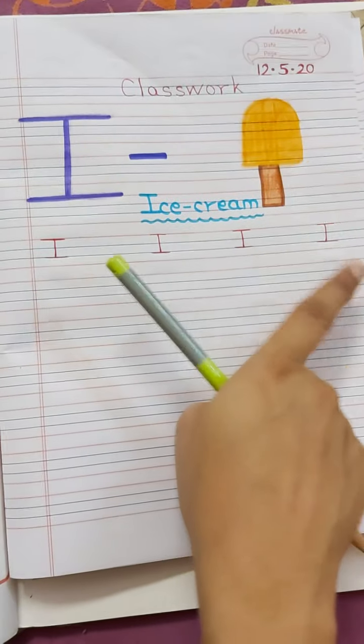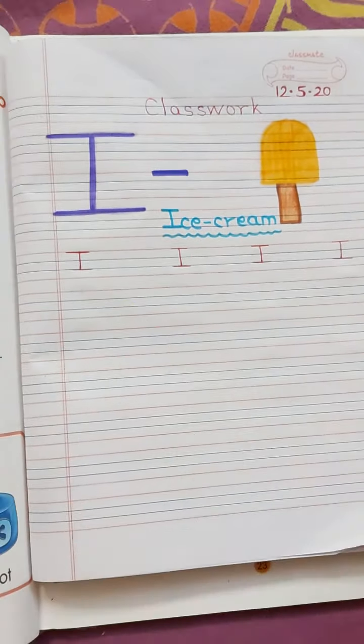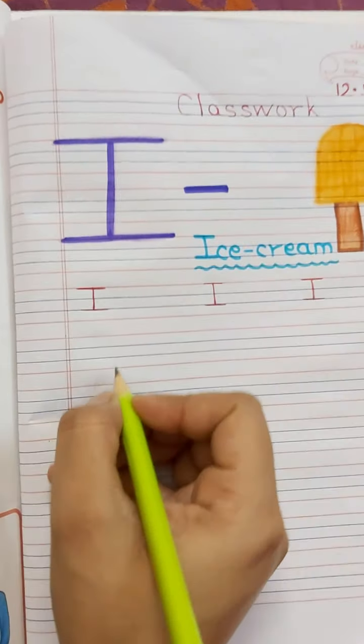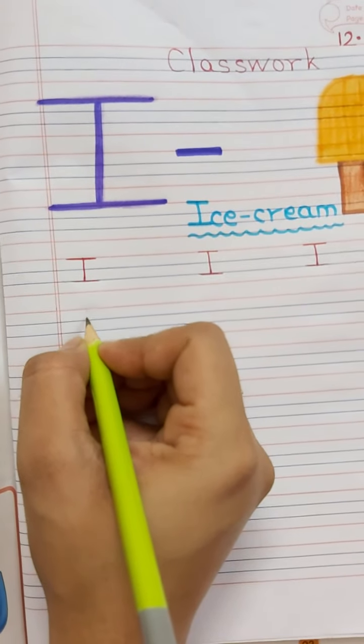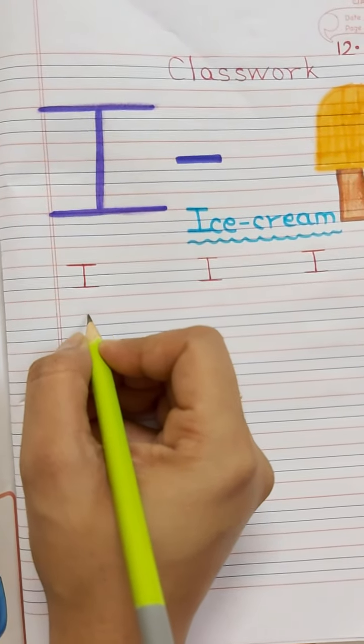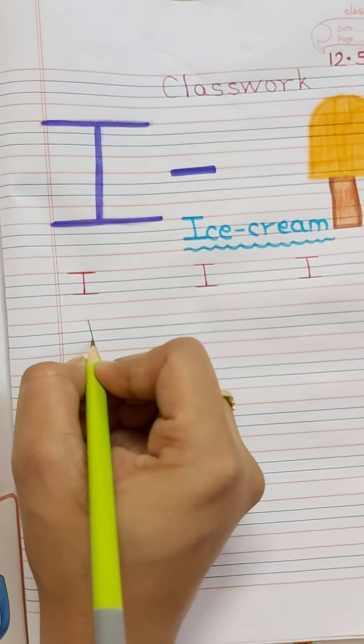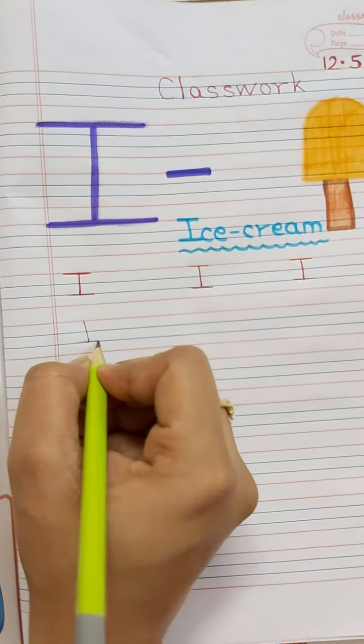Then, you have to write four times I. Four times aapko I likhna hai. Now, my dear students, bachyo idar dekhiya how you have to do the work. You have to write I in three lines. Straight line, sleeping line and one sleeping line.